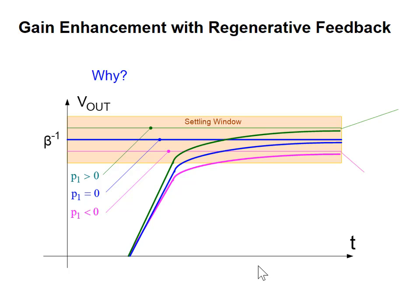What's the settling time if the pole is in the right-half plane? It's faster — it's when the response crosses the settling boundary, and that's the fastest. Of course, if you push it too far in the right-half plane, it will never settle into that window. But if you push it too far in the left-half plane, it will never settle either. So this is the argument that you can actually enhance performance: stability is not an issue, and overshoot or peaking in the gain response are non-issues whether the pole is a little in the left or right-half plane. But settling performance can actually be improved.